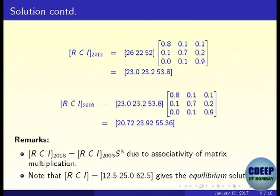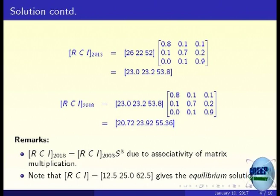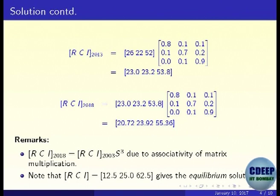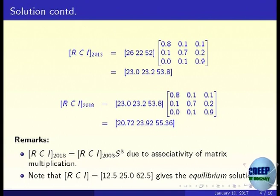One remark: one can directly compute by multiplying the 2003 data by S³, because first we applied S, then another S, then another S. By associativity, we can combine all these S's and take S³ and multiply directly. This is an illustration of the associativity of matrix multiplication.